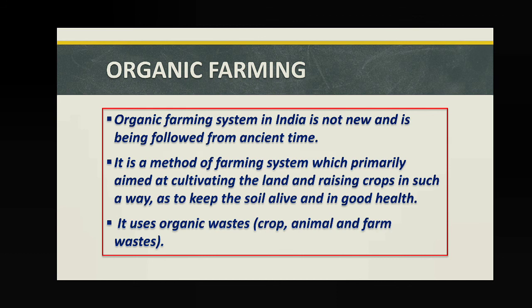Organic farming means no use of chemical fertilizers or pesticides. Instead, organic wastes from crops, animals, or farm waste are used. It is a system primarily aimed at cultivating land and raising crops in a way that keeps the soil alive and maintains good soil health. Chemicals are not good for our health or for soil health. That is all for today — Chapter 4 is now complete. Write down the class notes from the proper channel, and ask doubts through the query channel. Thank you, students, have a great day.